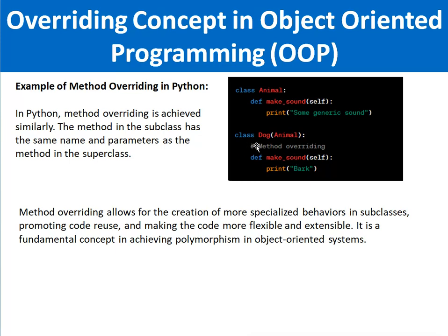When you create an object of the Dog class, the child class's makeSound method will be called. This is the concept of overriding in Python: makeSound exists in the base class and in the child class, but in the child class with the same signature you can redefine the method so that you can adjust it according to your need and requirement.